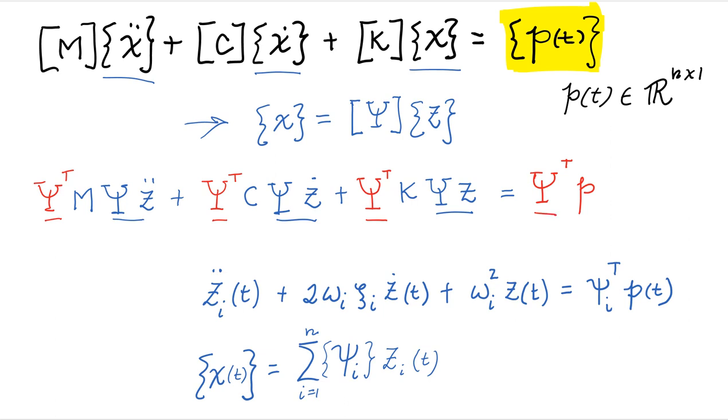And as we know from prior lectures, this term here, since the modes are mass normalized, is equal to the identity. This term right here, if the damping is classical, is going to be equal to 2 omega psi.